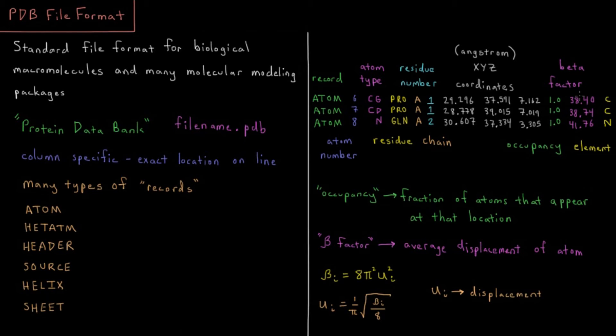Then we get a factor called the beta factor. That is related to the average displacement of our atom. Beta you might remember is related to temperature and statistical mechanics.